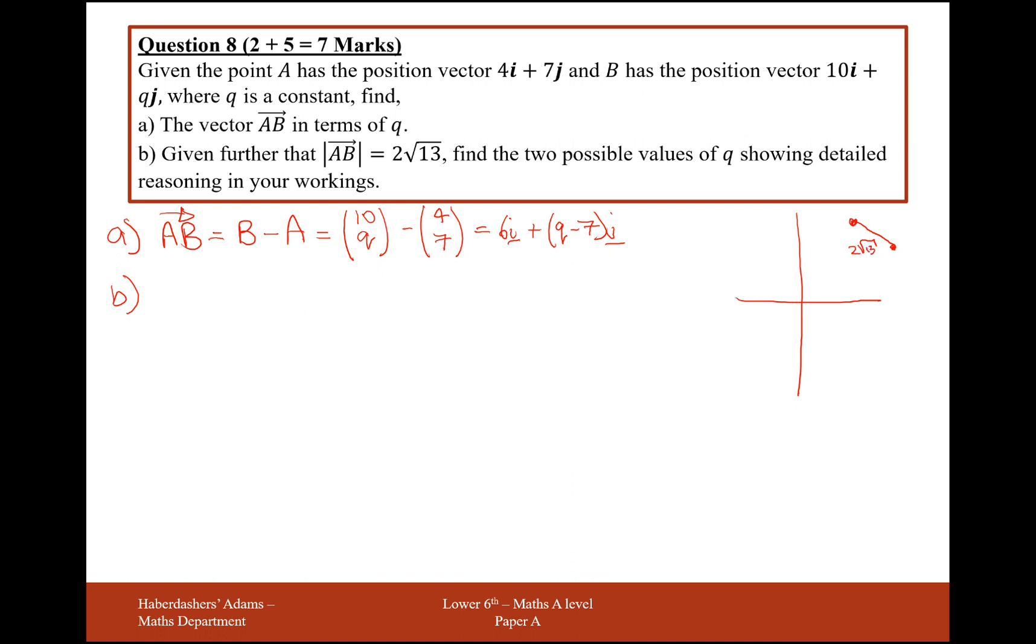So q can either be down here or q could be potentially up here as well. So that's why there are two values for q. It will give coordinate B just a different height, but the distance from coordinate A will always be 2 root 13.